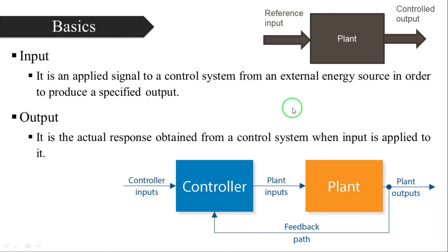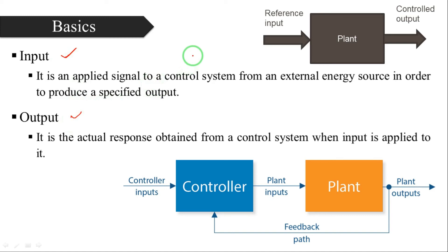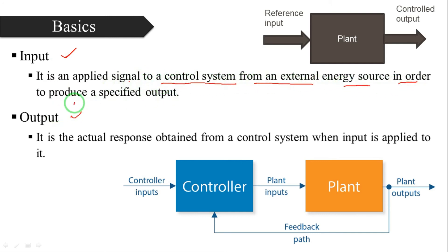I will tell you two more important points — input and output. Every system and every plant consists of some input and some output. Input is the signal applied to a control system from an external energy source in order to produce a specified output. Every plant requires some input to produce an output.